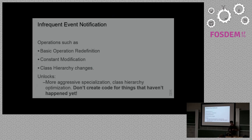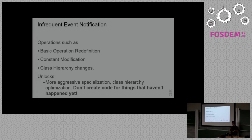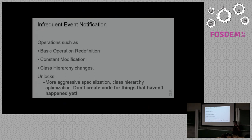One of the kinds of information we really like to see MRI export is the notion of infrequent event notification. There are a whole bunch of things that in a typical application might never happen — things like redefining basic operations. If you're going to redefine Fixnum plus or Fixnum add, this is a weird thing to do and probably won't happen very often. But if it does happen, I would like the VM to actually tell us. Similarly, modifying constants, changing the class hierarchy — these unlock new kinds of optimization. We can be more aggressive in specialization, optimizing calls based on assumptions about the class hierarchy.